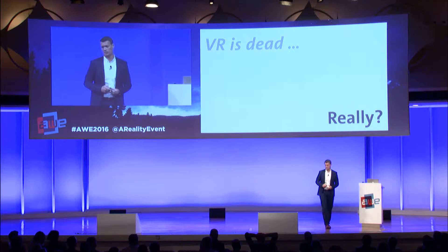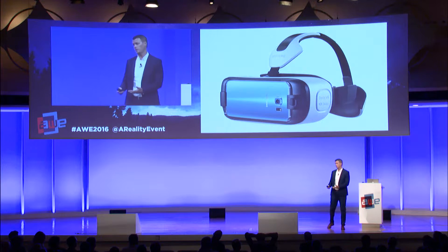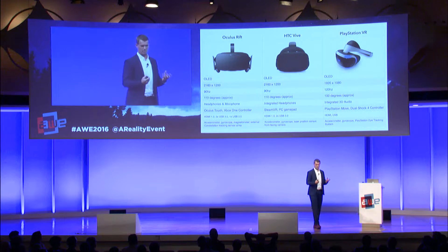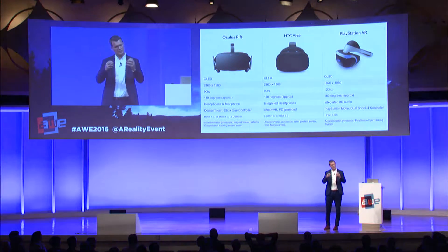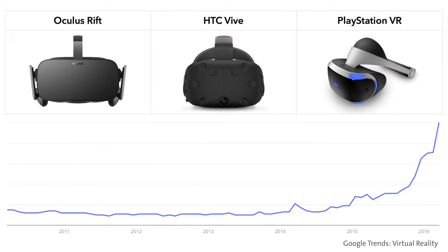The ironic thing is that all the exponential advancements we observed in the smartphone sector led to a rebirth and resurgence of VR and AR technology. All the components in today's HMDs are based on advancements from the smartphone sector: LCD panels, OLEDs, inertial measurement units, gyroscopes, and GPU power. The ultimate displays of today still aren't truly ultimate, but you get a glimpse of the future.